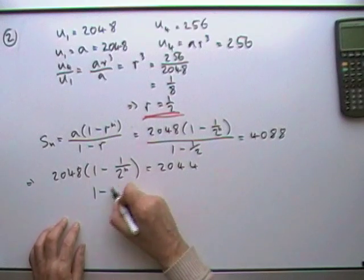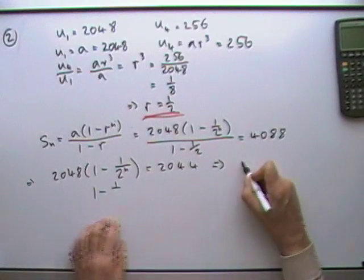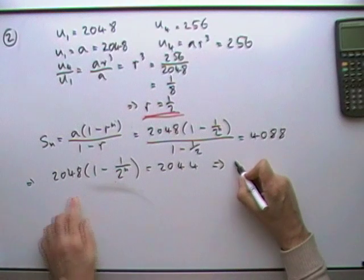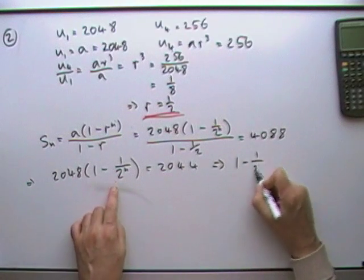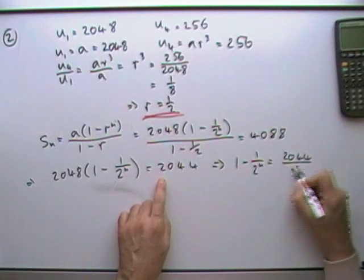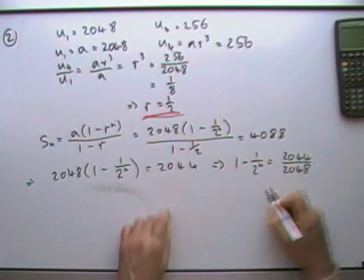That gives 2044. Take that across and divide. So 1 minus 1/2^N will be 2044 over 2048.